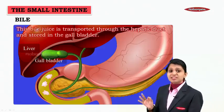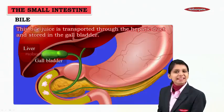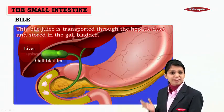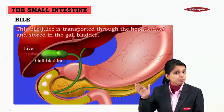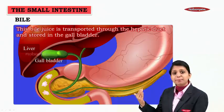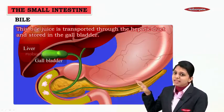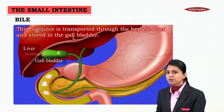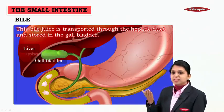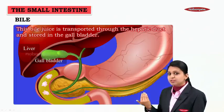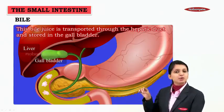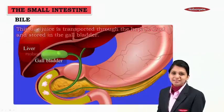The bile juice is transported through the hepatic duct and stored in the gallbladder. Bile juice is produced by the liver, transported through the hepatic duct, and stored inside the green organ we see here, known as the gallbladder.